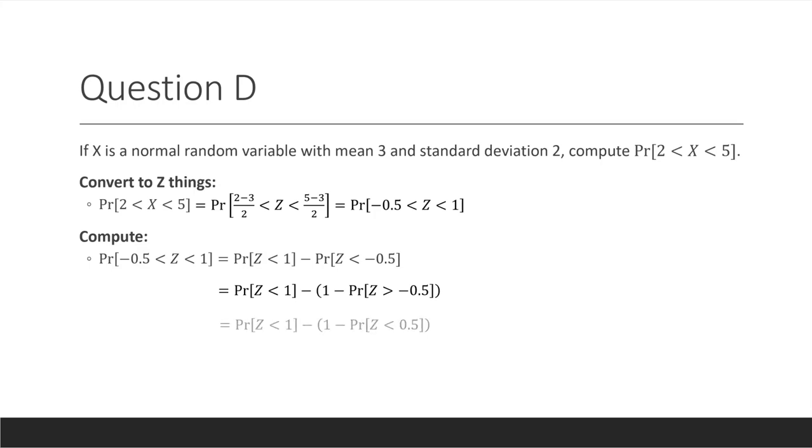And then we use symmetry to replace the probability that z is greater than minus 0.5 with the probability that z is less than 0.5. And finally, we go to the table and plug things in to get 0.4608.